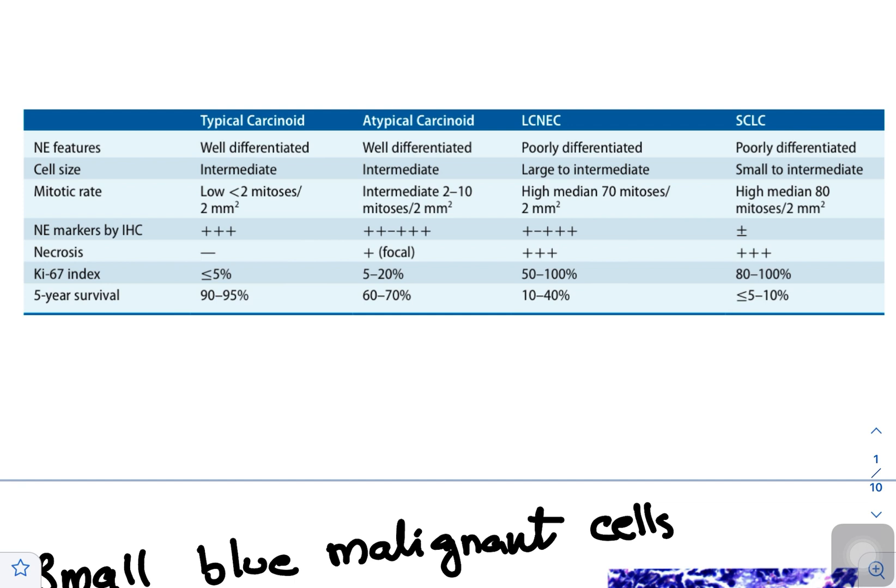This is a very good table in which you can see typical carcinoid, atypical carcinoid, large cell neuroendocrine carcinoid, and small cell. The neuroendocrine features of small cell are poorly differentiated.